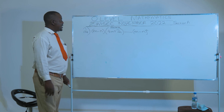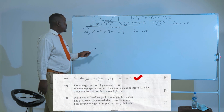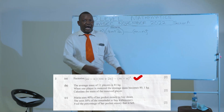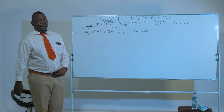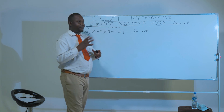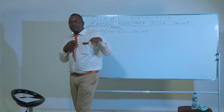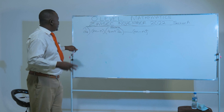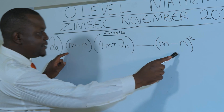In question number two, we are required to factorize the following algebraic expression. How do we factorize this algebraic expression? First and foremost, the word factorize comes from the word factor, and a factor is a number which gets into another number without leaving a remainder.